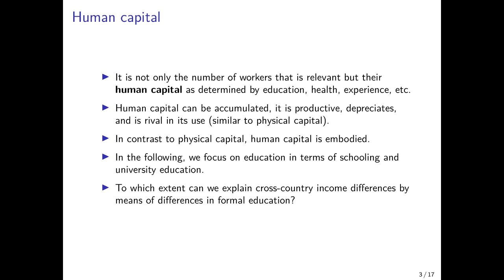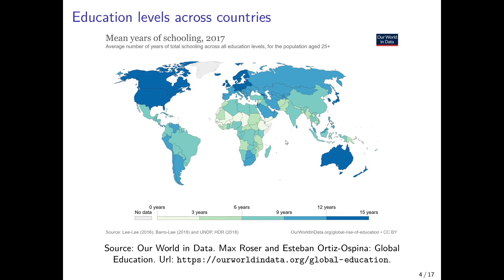In the following, we focus on education in terms of schooling or a university degree, and we abstract from investments in health and accumulation of experience. The investment in education is typically seen as the most important determinant of human capital. The question we want to answer in the first part of this video is to what extent we can explain cross-country income differences by means of differences in formal education observed across countries. These differences are illustrated by a world map taken from the website Our World in Data, which I highly recommend to anyone interested in cross-country data on living standards, education, and health. A huge effort has been put into this database by its developers, in particular Max Roser and his co-authors.